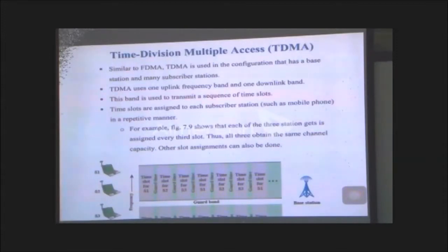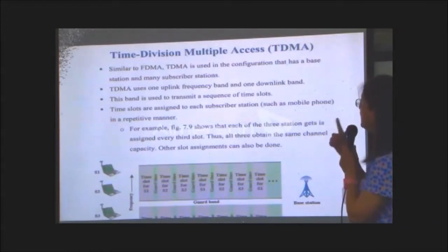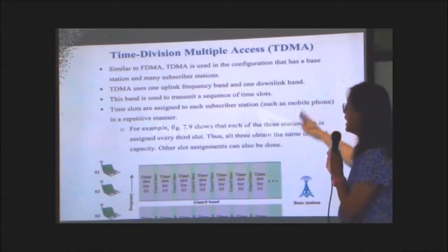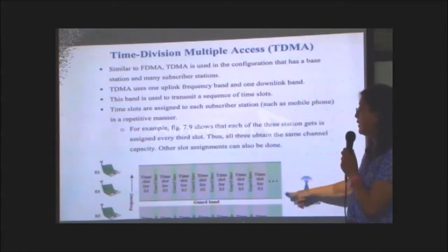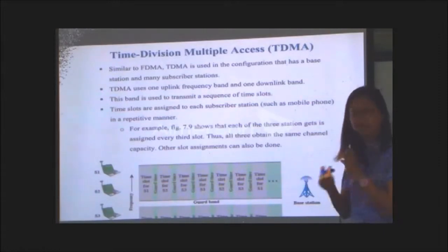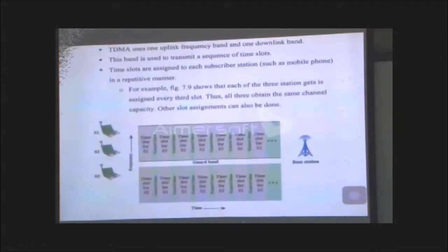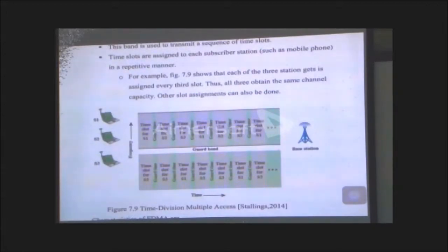TDMA is more of a digital signal. TDMA is more of an analog signal. So TDMA is kind of digital signal. We use one uplink frequency band and one downlink frequency band. However, we will divide the time into time slots.